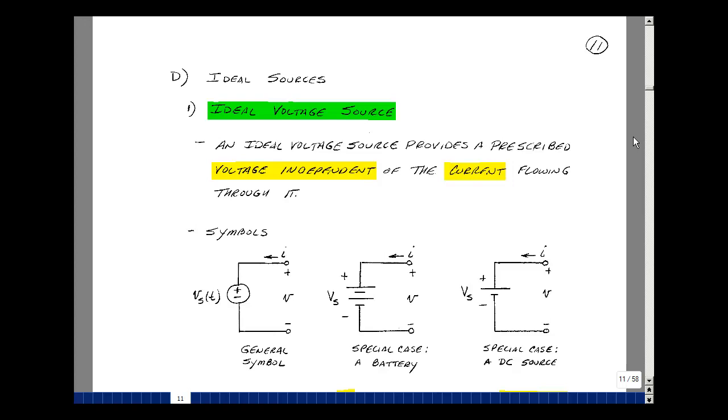This lesson deals with ideal sources. You can find these notes in the ECE 201 eBook in Chapter 2, starting on page 11. In this lesson, we're going to introduce two more idealized circuit elements. The first is an ideal voltage source and the second will be an ideal current source.